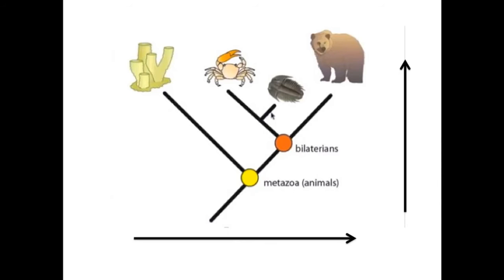Sponges, crabs, trilobites, and bears are all animals. Therefore, their intersection is at the yellow dot, termed metazoa, which just means animals.